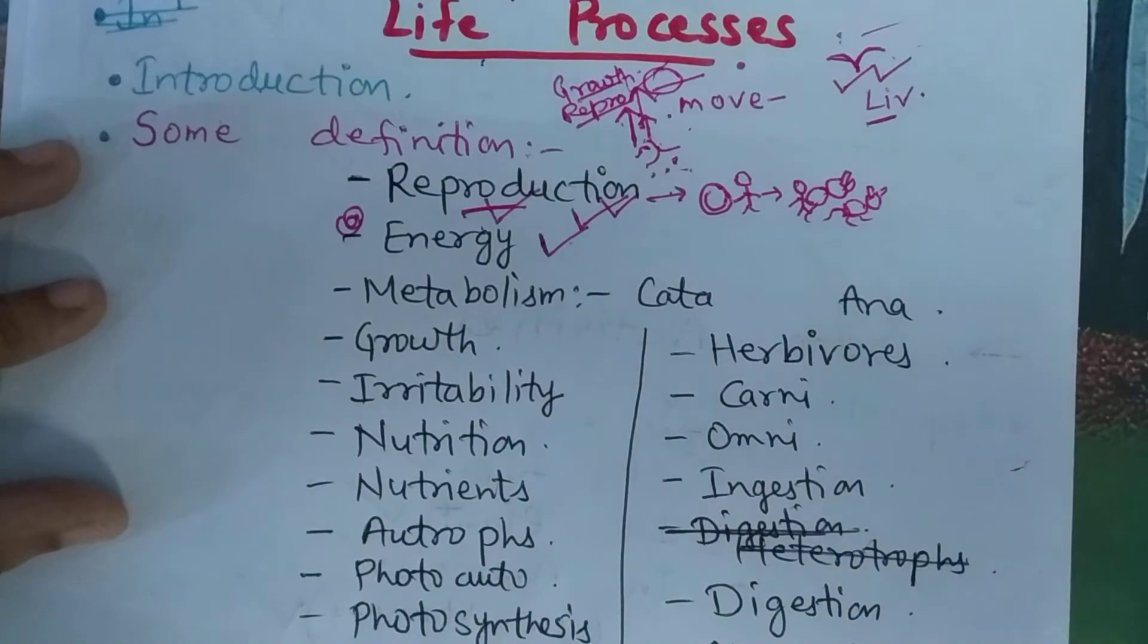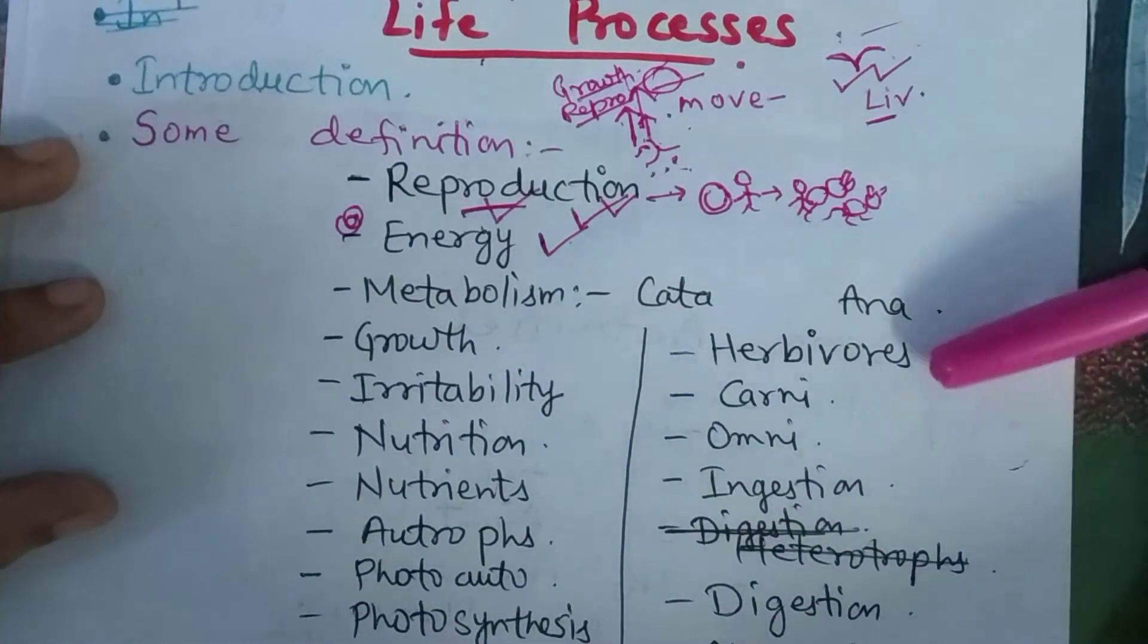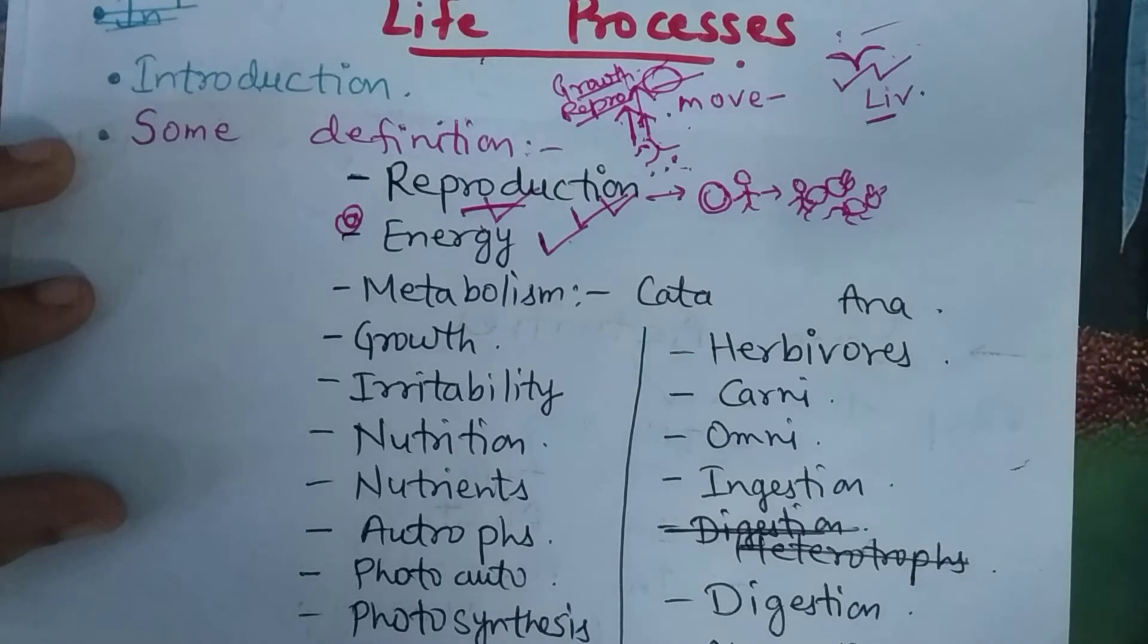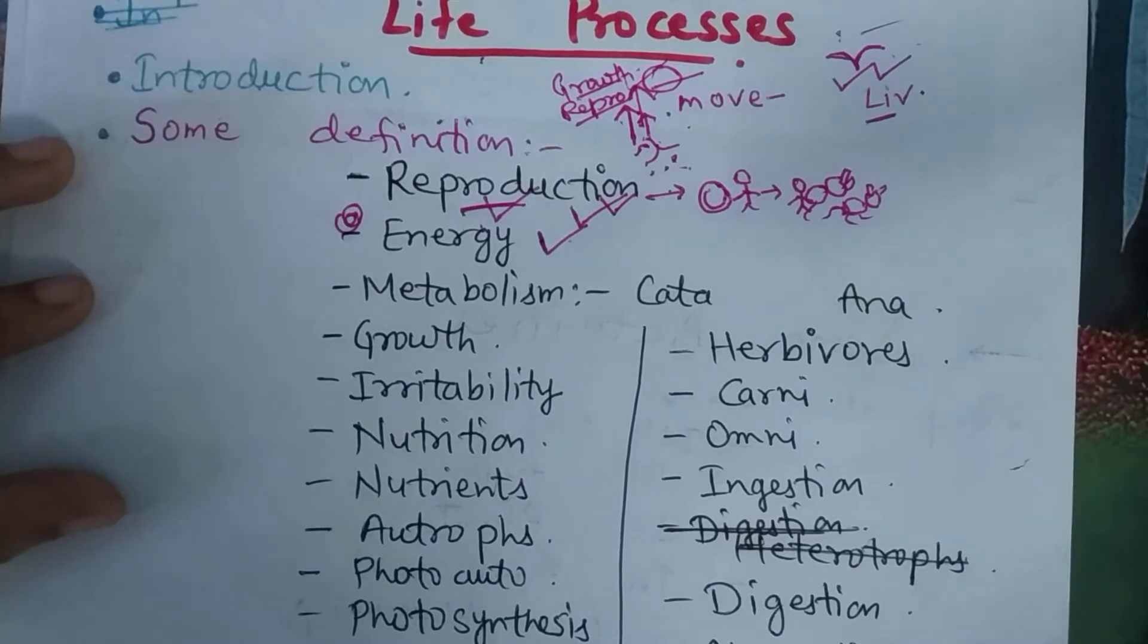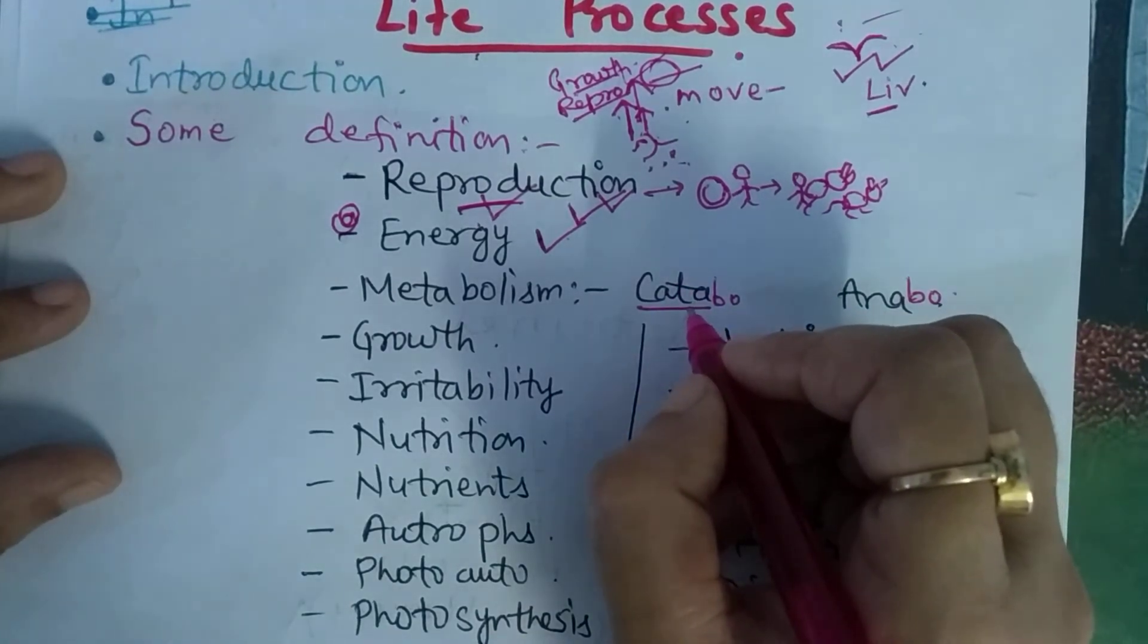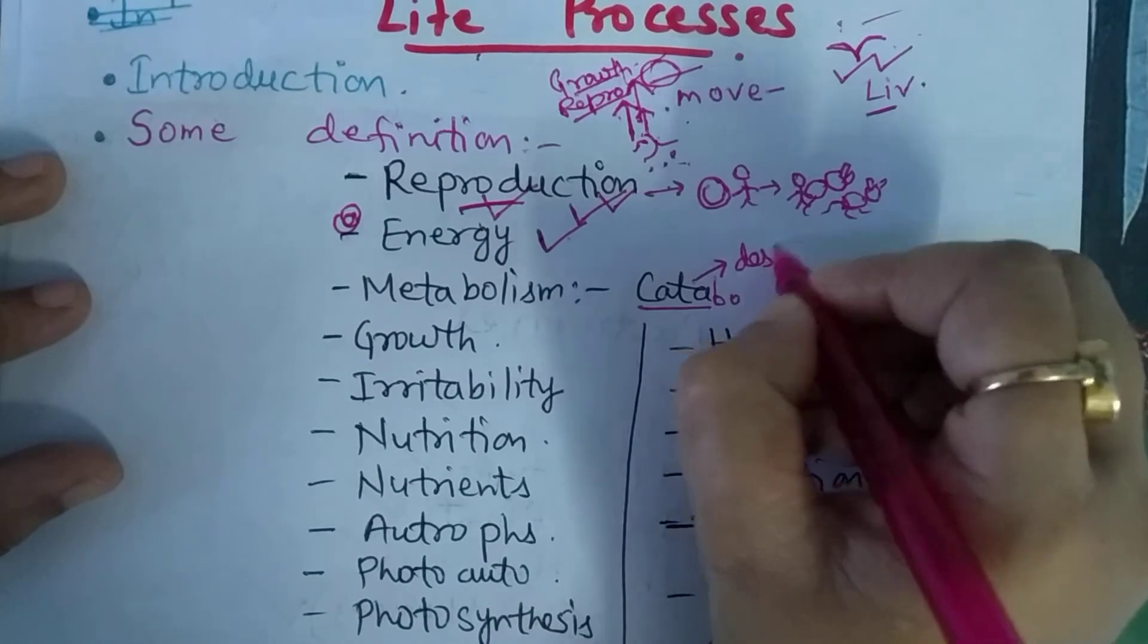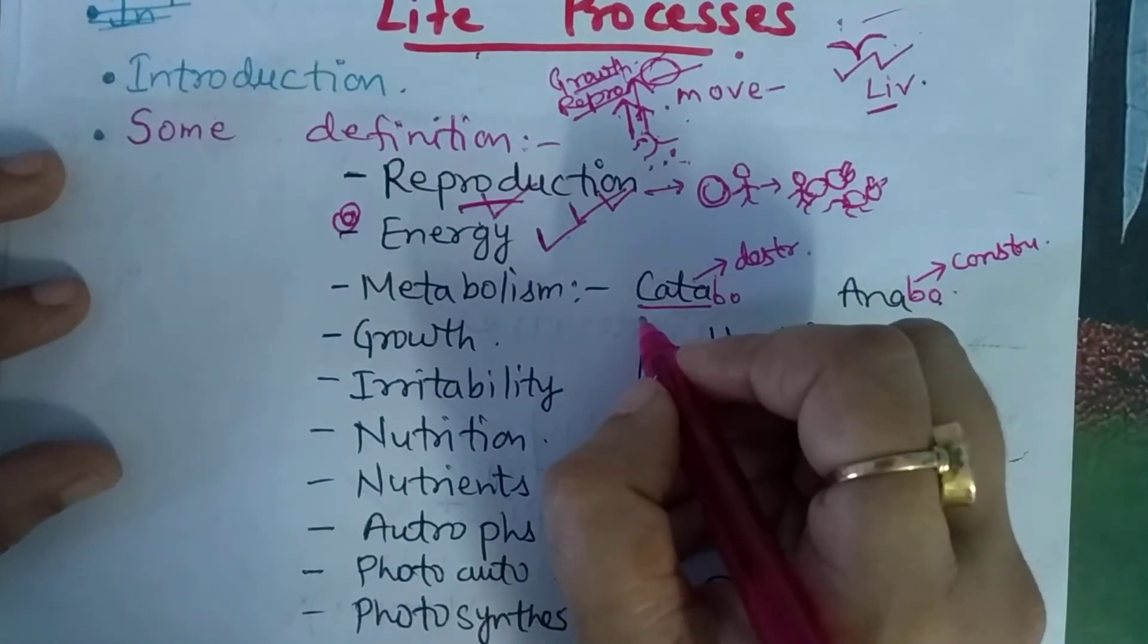Then comes the next definition which is metabolism. Metabolism is the sum total of all reactions in an organism. Whatever reactions keep happening in our body, like respiration and photosynthesis in plants, all these reactions combinedly are known as metabolism. Metabolism is of two types: catabolism and anabolism. Many students get confused about how to remember this, because catabolism is also known as destructive reaction and anabolism is also known as constructive reaction.